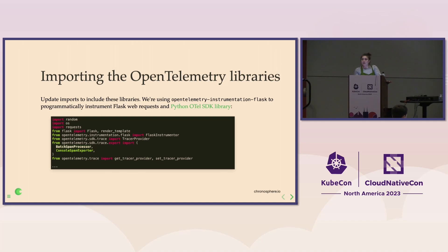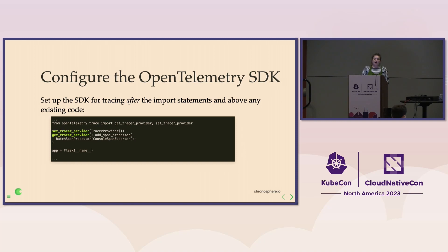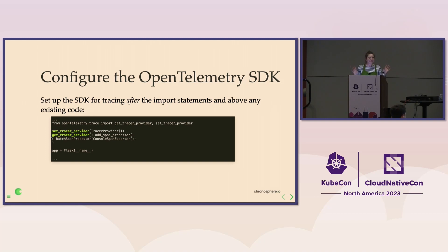Then we'll move to configuring the OTEL SDK. After our import statements and above any existing code, this is the first thing we want to drop in there — still in app.py. We set our tracer provider, get our tracer provider, and make sure we're adding that batch span processor and the console span exporter. That's not a lot of config — it's pretty nice, very minimal, not totally making our app code horrible.